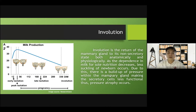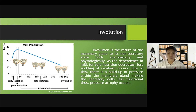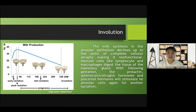Involution is the return of the mammary gland to its non-secretory state, both anatomically and physiologically. As the dependence on milk for sole nutrition decreases in the neonate, less suckling of the newborn occurs. Due to this, there is a build-up of pressure within the mammary gland, making the secretory cells less functional, and thus pressure atrophy occurs. The milk synthesis and the alveolar epithelium declines up to the point of complete cellular atrophy, making it non-functional. Immune cells like lymphocytes and macrophages digest the tissue of the mammary gland.